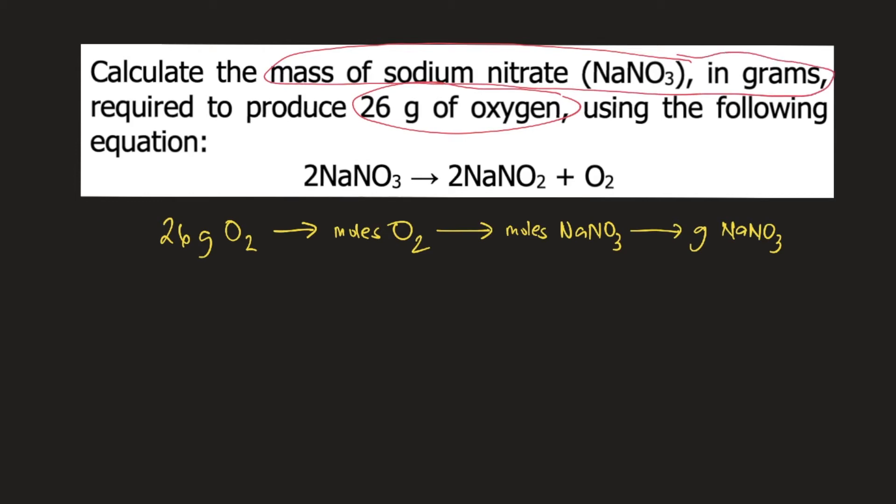Let's start the solution. From 26 grams of oxygen gas, or O2, to convert that into moles, you need the molar mass of O2. The molar mass of O2 is 32 grams per mole. So you put 32 grams at the bottom and on top you put 1 mole. Grams of oxygen gas will cancel.